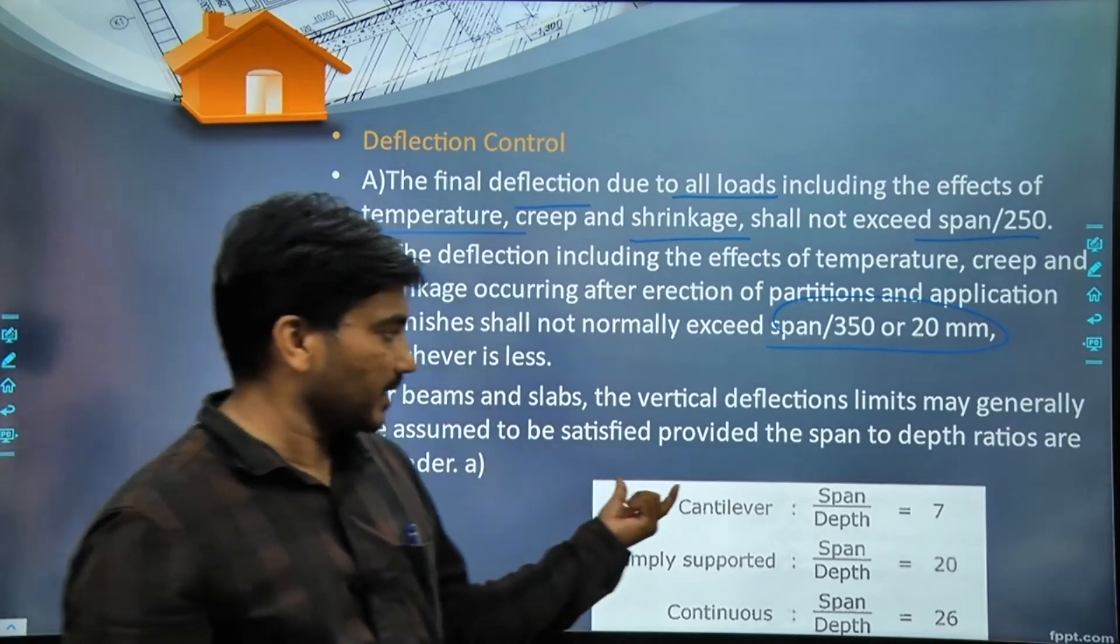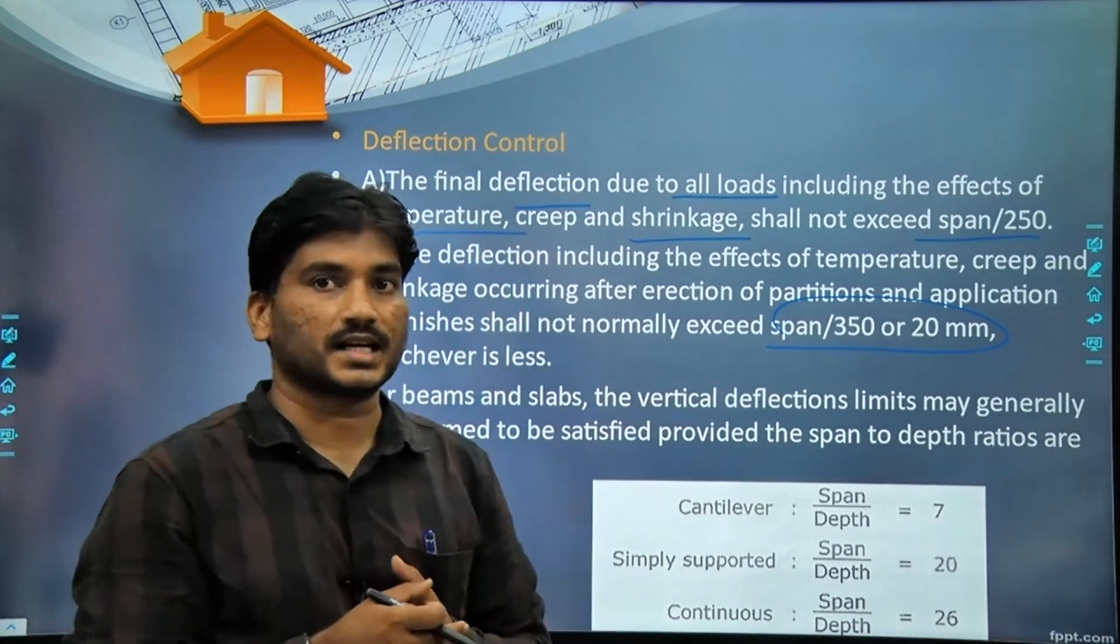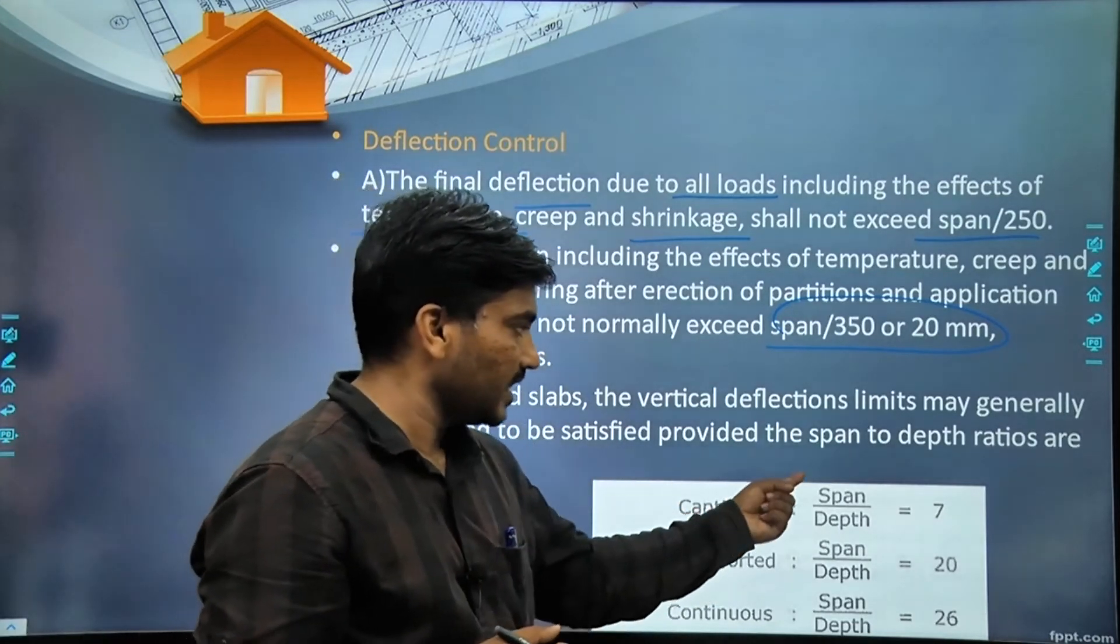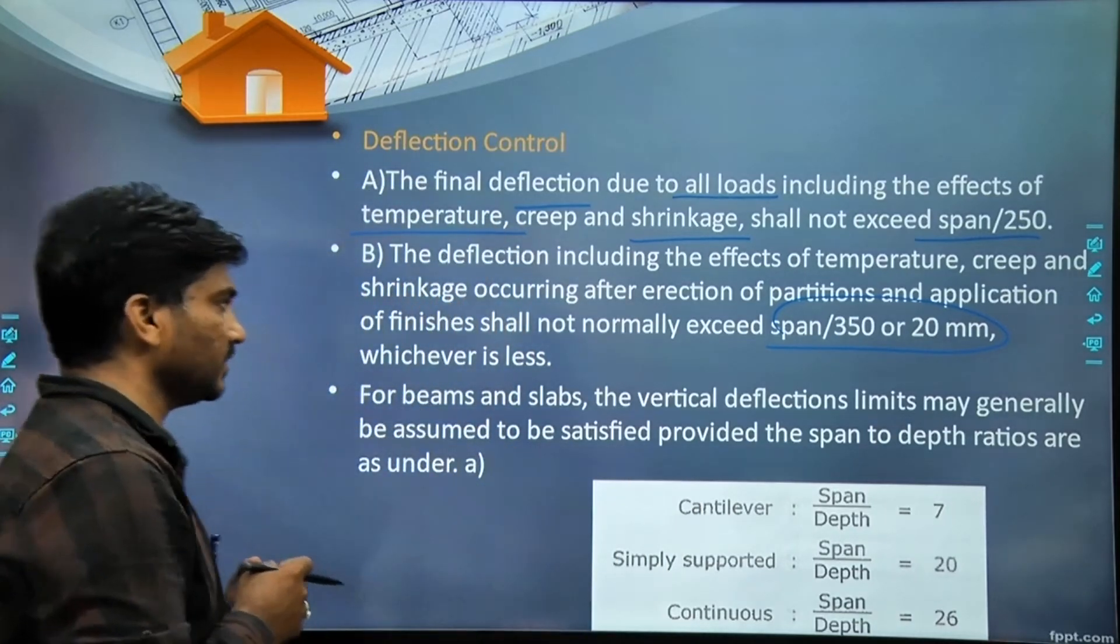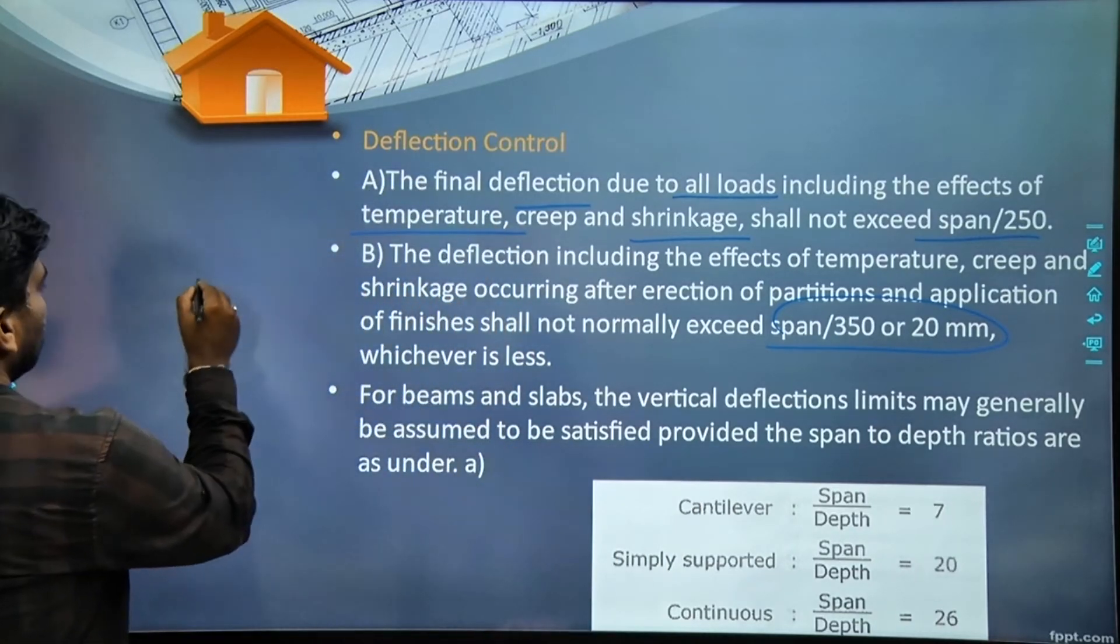For cantilever, when we have to judge the initial depth, in the case of cantilever the span by depth ratio should be 7. For example, if a cantilever beam is given...